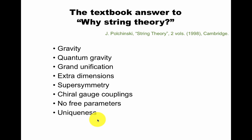The textbook answer to why string theory is it contains classical gravity, quantum gravity, grand unification, extra dimensions. These ideas have showed up in other contexts. Supersymmetry, chiral gauge couplings like in the Standard Model, left-handed and right-handed particles in different gauge representations. No free parameters, and is the theory unique?